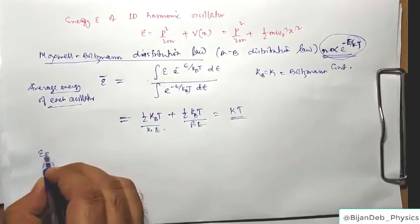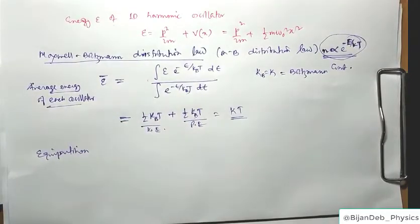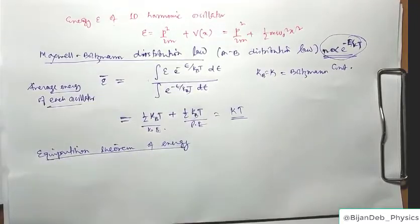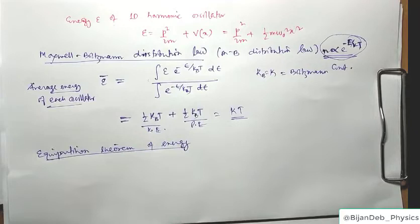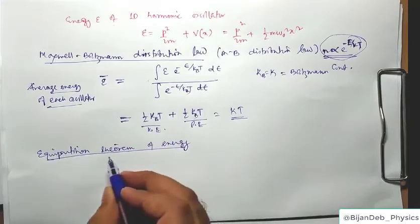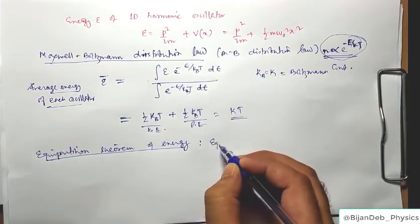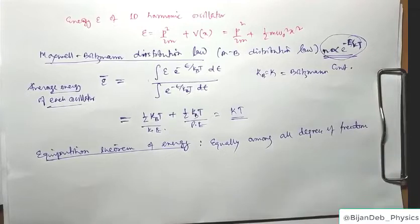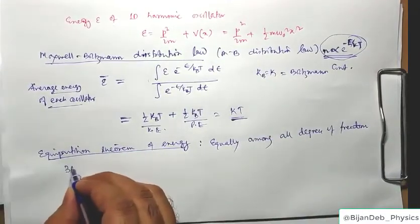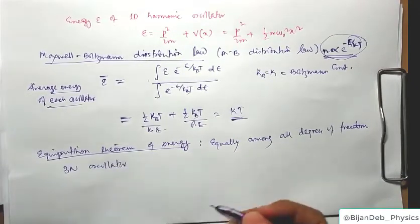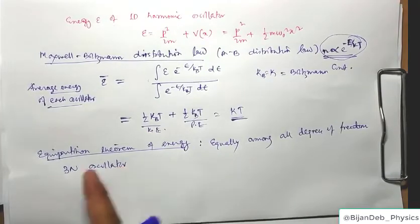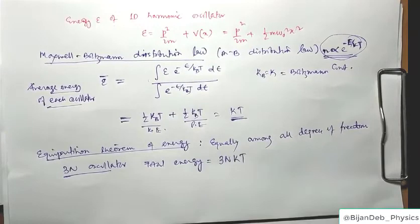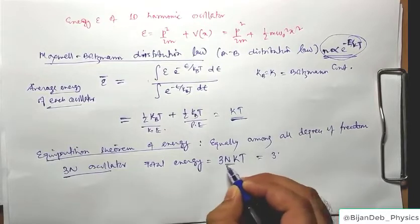This result follows from the equipartition theorem, which states that energy is distributed equally among all degrees of freedom — ½kT per quadratic term. For each one-dimensional harmonic oscillator (with kinetic and potential energy terms), the total energy is kT. With 3N oscillators, the total energy of the system is 3NkT.